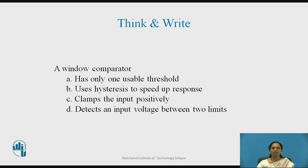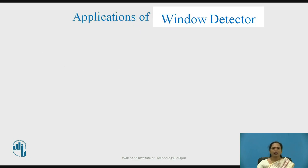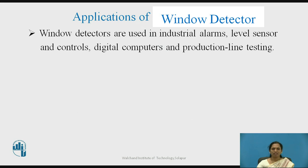Think and write the correct option: a window detector or window comparator — options are: has only one usable threshold; uses hysteresis to speed up response; clamps the input positively; or detects the input voltage between two limits. As you understood the use of a window comparator, the correct answer is option 4. Applications include industrial alarms, level sensors and controls, digital computers, and production line testing.